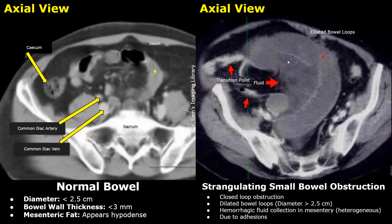Here is another case showing fluid in the mesentery which strongly suggests small bowel ischemia. The bowel loops are dilated, and transition points are seen suggesting a closed loop obstruction. The shape of the dilated bowel is also C-shaped. This was due to adhesions.